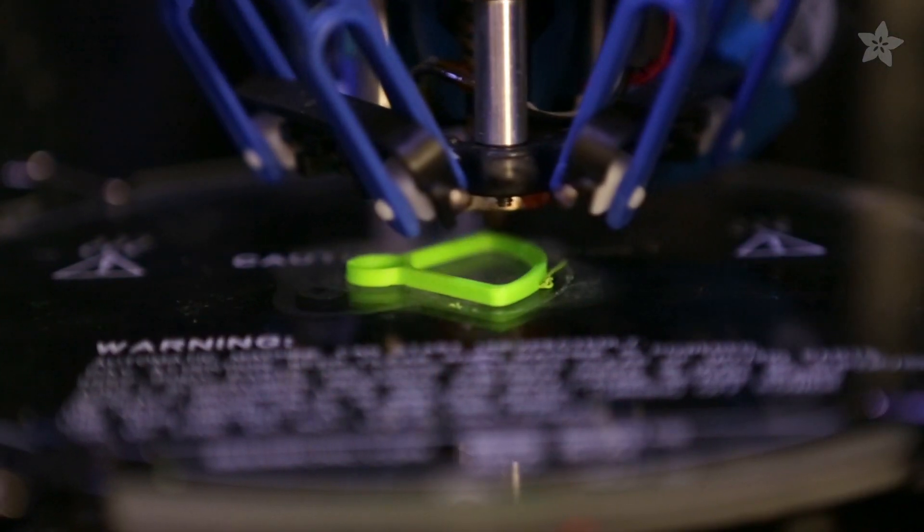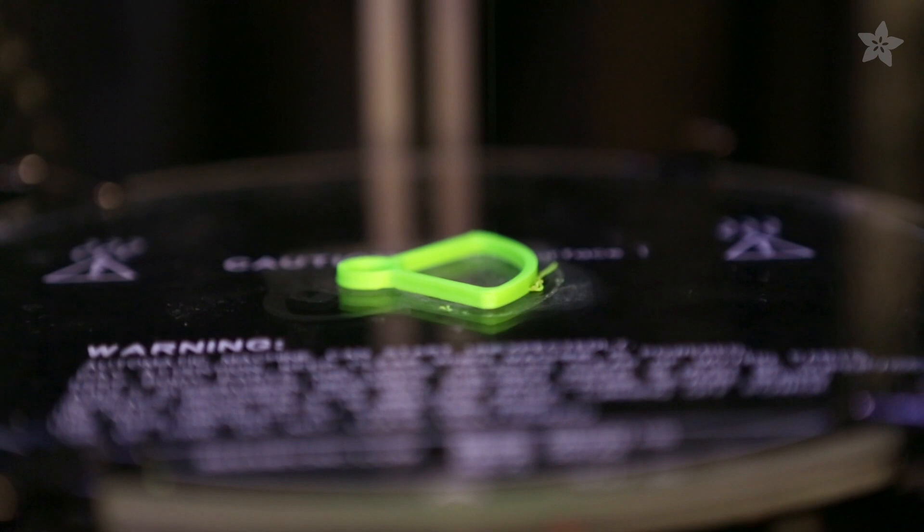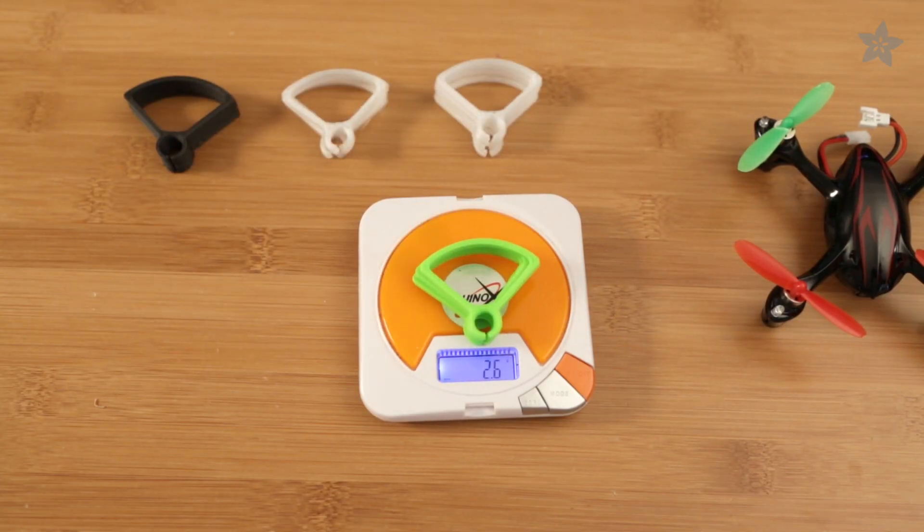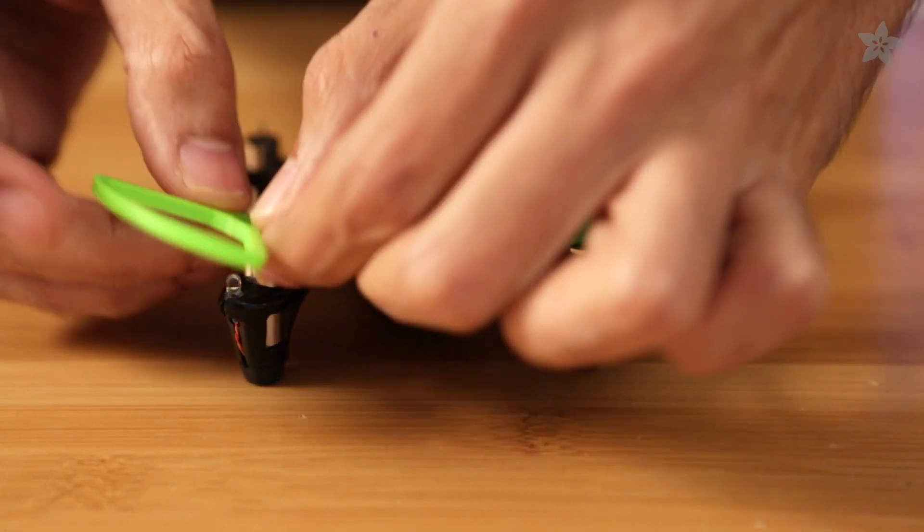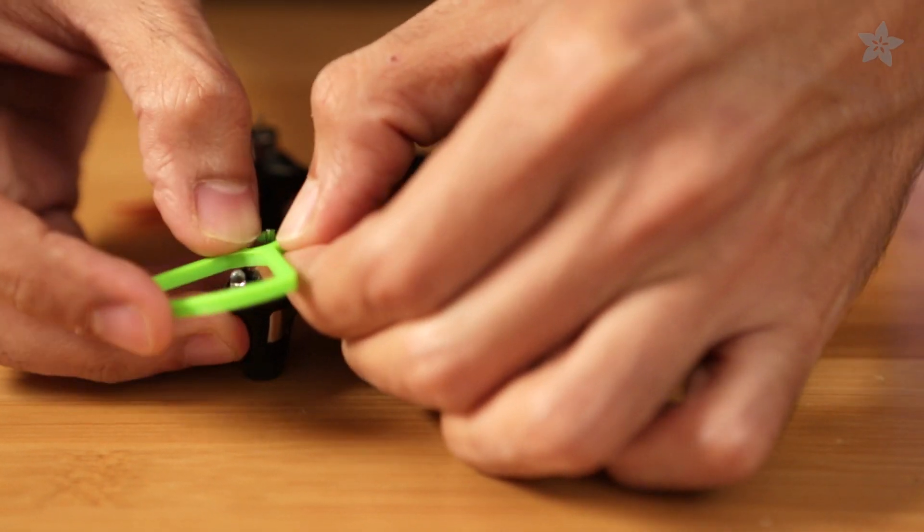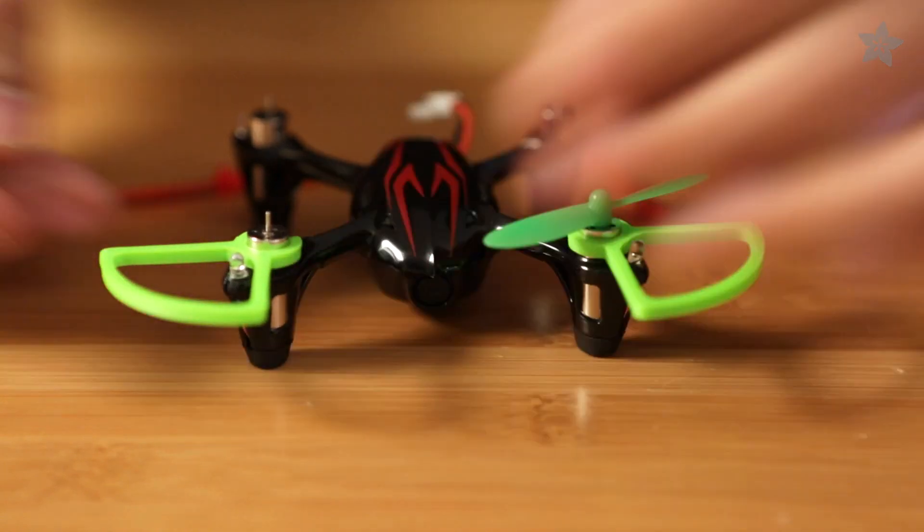Okay, now we're going to test out ABS, which does require a heated bed, so it takes longer to print because you've got to heat the bed and let it cool down. ABS weighs significantly lighter than the bunch, coming in at just 2.6 grams. It also has nice flex to it and feels a lot softer than the others. Tolerances are really tight, so they're going to grip onto the motors nicely.